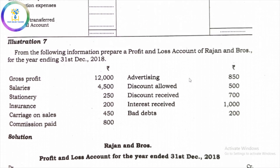Illustration 7. We have the figures from Rajan and Bros. We need to prepare the profit and loss account. The given items are: gross profit, salary, stationery, insurance, carriage on sales, commission paid, advertising, discount allowed, discount received, interest received, and bad debts.